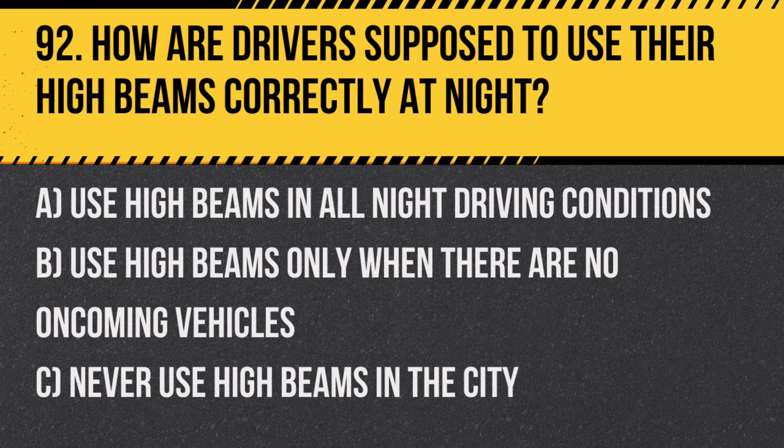Question 92: How are drivers supposed to use their high beams correctly at night? A. Use high beams in all night driving conditions. B. Use high beams only when there are no oncoming vehicles. C. Never use high beams in the city. Answer: B. Use high beams only when there are no oncoming vehicles. This prevents blinding other drivers and enhances safety for all.